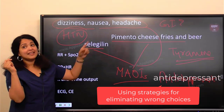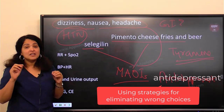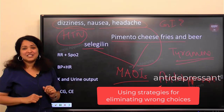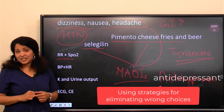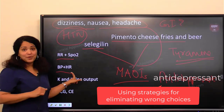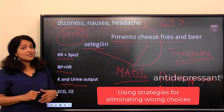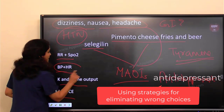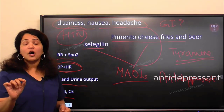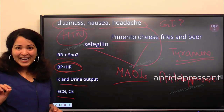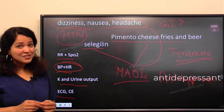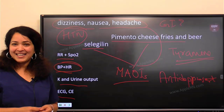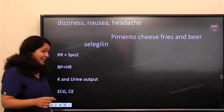Now we can connect the signs and symptoms to the reason. If I can check only one thing as the priority, what should it be? Respiration and saturation? Blood pressure and heart rate? Urine output and potassium? ECG and cardiac enzymes? Because I am worried about hypertensive crisis, the priority assessment is going to be blood pressure and heart rate.